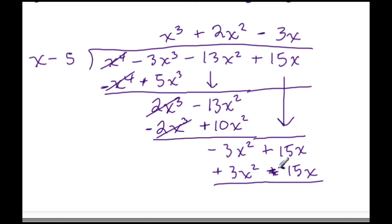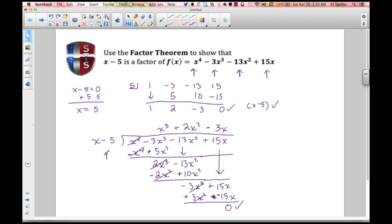The leading terms cancel, and positive 15X minus 15X gives a remainder of 0. So we've proven that X minus 5 is a factor of this polynomial. That concludes this video by Spell Tutorial Services. Please friend us on Facebook and subscribe to our YouTube channel, both found under the name Spell Tutorial Services.